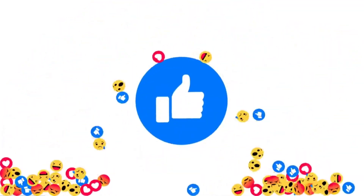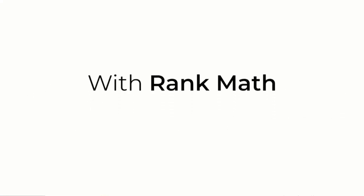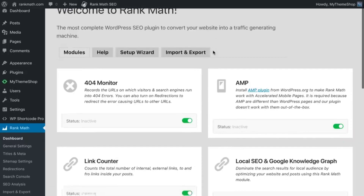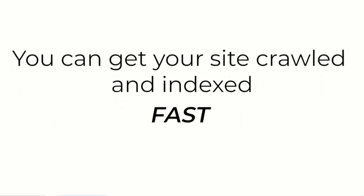So there you have it — 15 amazing features that make Rank Math the ultimate SEO plugin for WordPress. Whether you're a beginner or an SEO pro, Rank Math has everything you need to take your website's SEO to the next level. Try it out for yourself and see the difference Rank Math can make. Try Rank Math today — it's free. Link in the description and pinned comment. And be sure to check out my next video where I'll be doing an in-depth comparison of Rank Math versus Yoast versus All-in-One SEO, so you can decide which plugin is right for you.